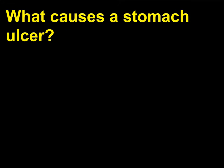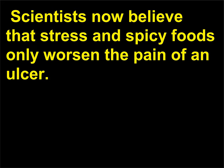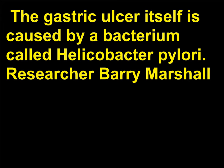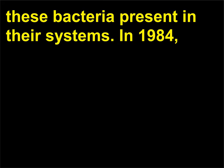What causes a stomach ulcer? For decades, doctors thought that genetics or anxiety or even spicy foods caused stomach ulcers. Scientists now believe that stress and spicy foods only worsen the pain of an ulcer. The gastric ulcer itself is caused by a bacterium called Helicobacter pylori. Researcher Barry Marshall of Australia observed that many ulcer patients had these bacteria present in their systems.